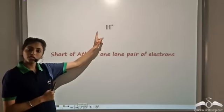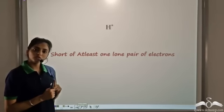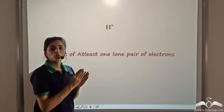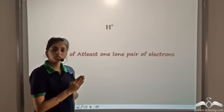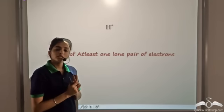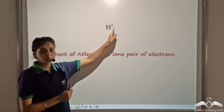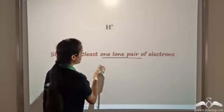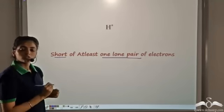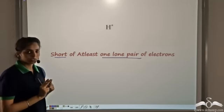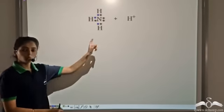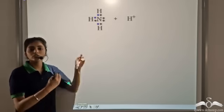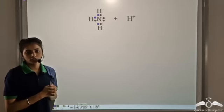We know a hydrogen atom has one electron. When it loses one electron, it becomes H+. Now in order to have a duplet structure, it needs two electrons — that is, this H+ is short of one lone pair of electrons. So now we have our two species: one which has at least one lone pair of electrons, and another which is short of one lone pair of electrons.